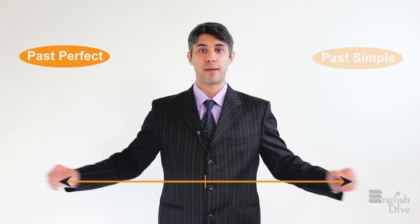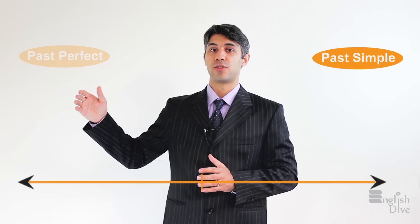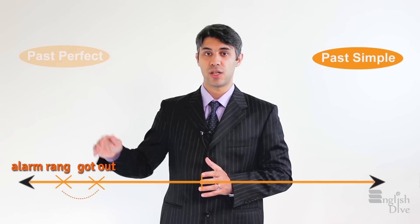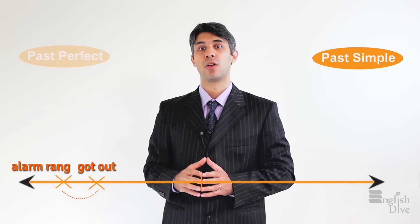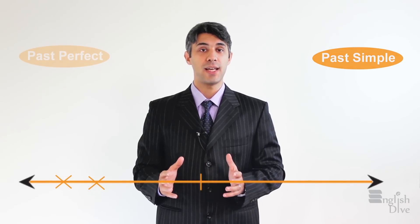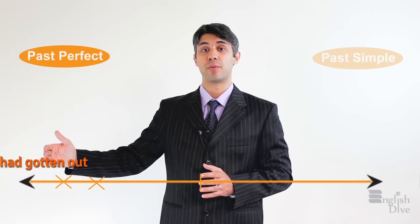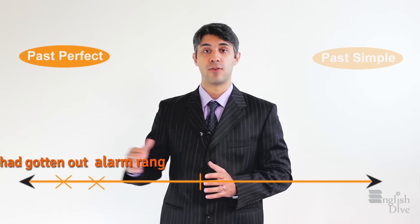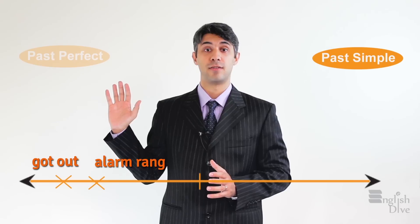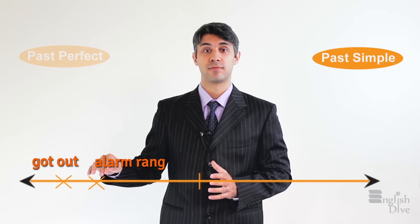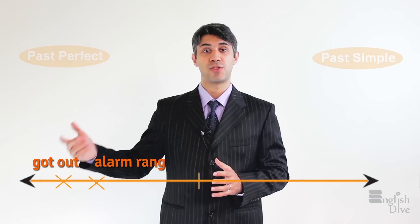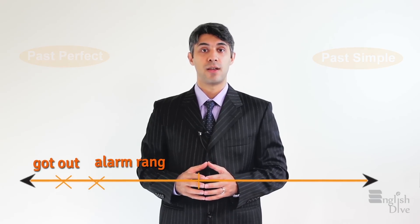Let's look at the timeline. For the first sentence: 'She got out of bed when the alarm rang.' It means the alarm rang first, and then she got out of bed. For the second sentence: 'She had gotten out of bed when the alarm rang.' Here, first she got out of bed — she was already out of bed — and then the alarm rang. So you see, a little difference can change the sequence of the activities that you're talking about.